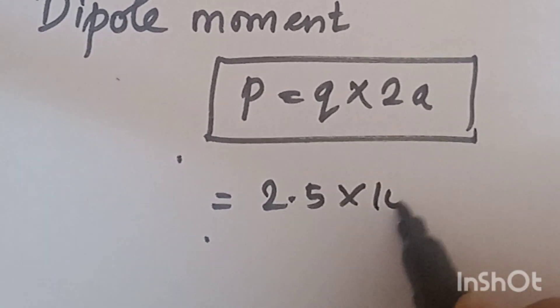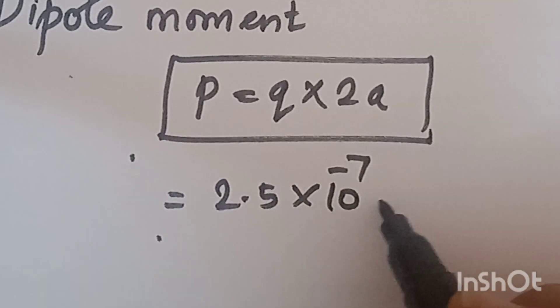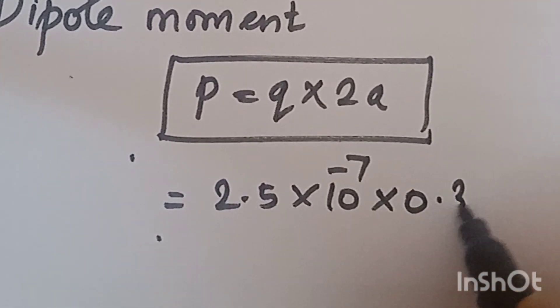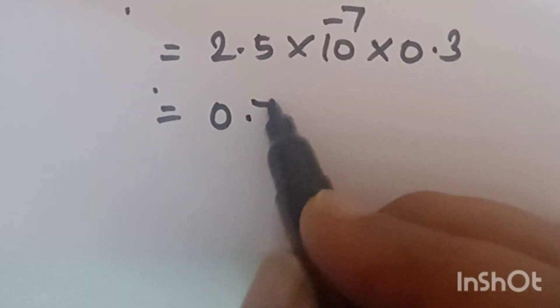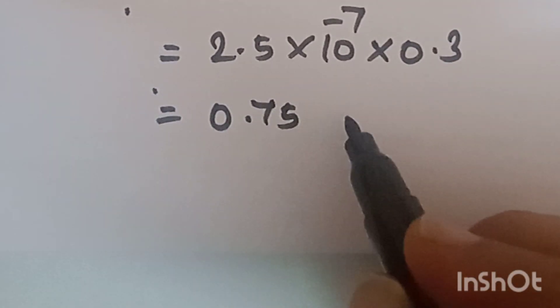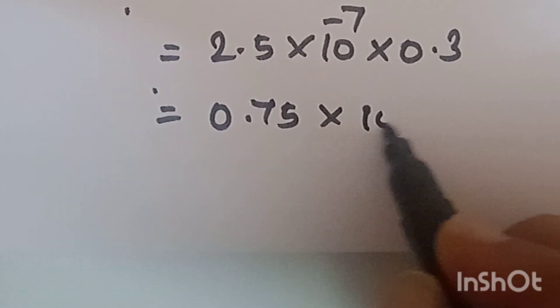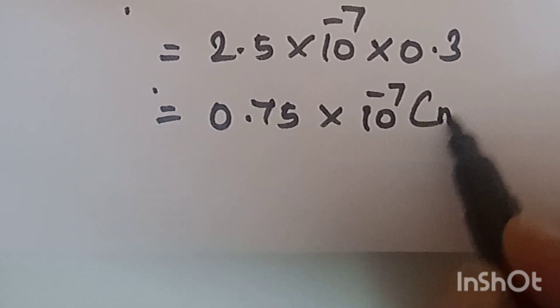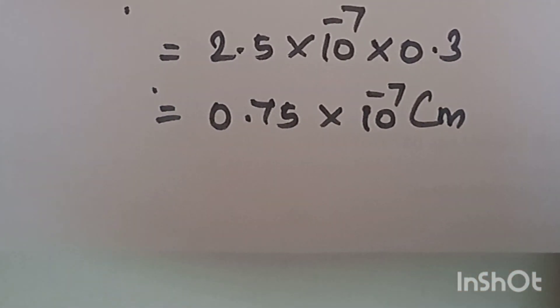We have two distances. Here is 15 and here is 15, so total is 30 centimeters. 30 centimeters equals 0.3 meters. Therefore, 2.5 into 10 power minus 7 times 0.3 equals 0.75 into 10 power minus 7 Coulomb meter.